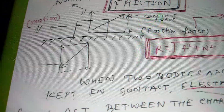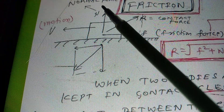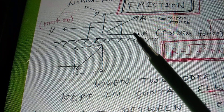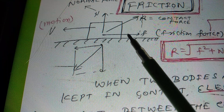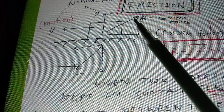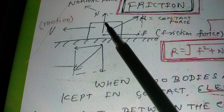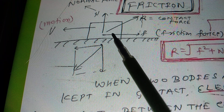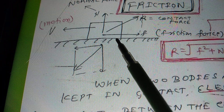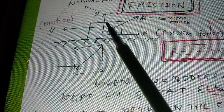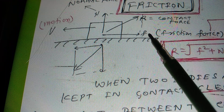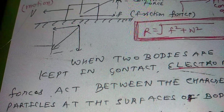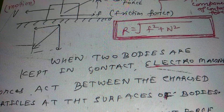Frictional force is nothing but the contact force — it is the horizontal component of the contact force. Normal force is the perpendicular component of the contact force, and the total net contact force R is equal to √(F² + N²). The net contact force is not necessarily perpendicular to the surface; if both normal force and frictional force are present, the resultant contact force will be oblique.